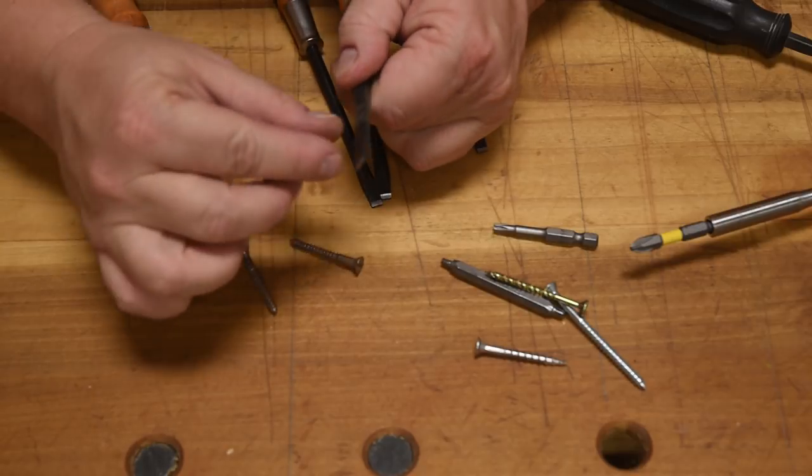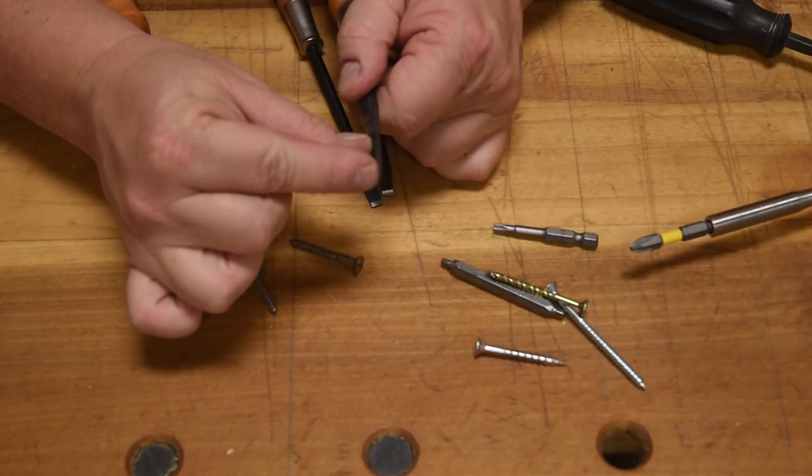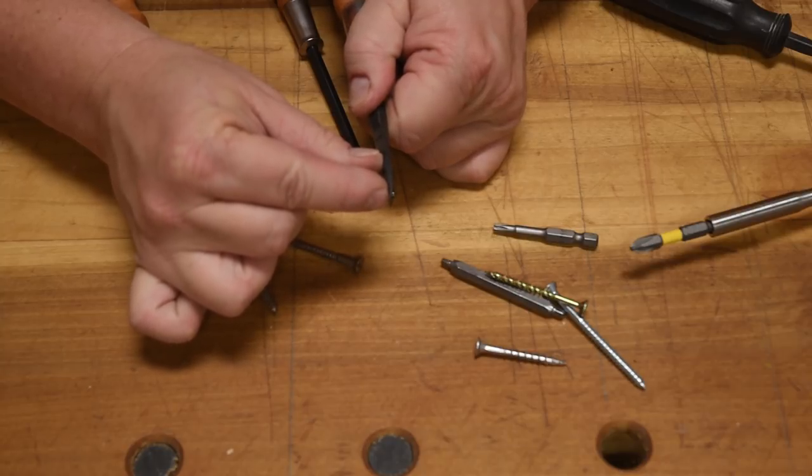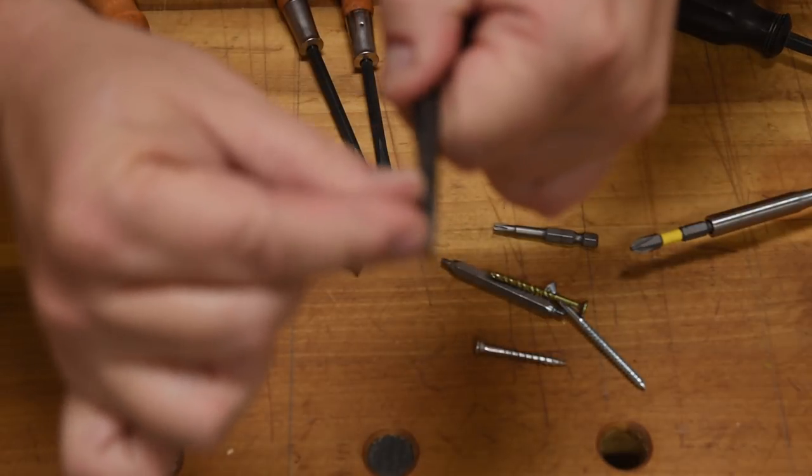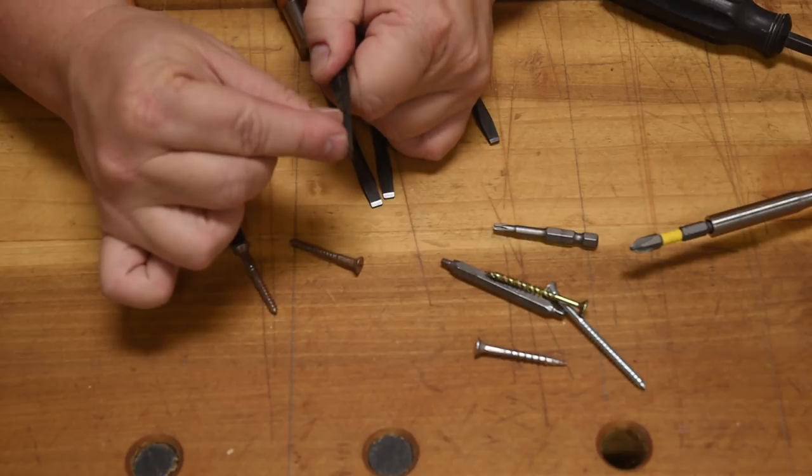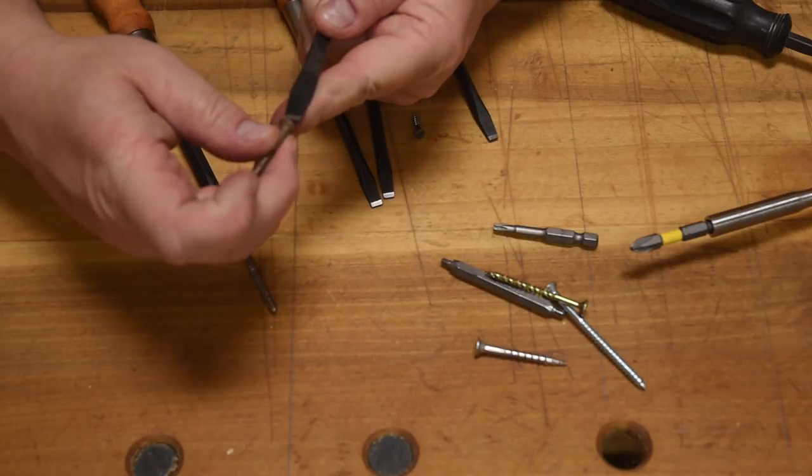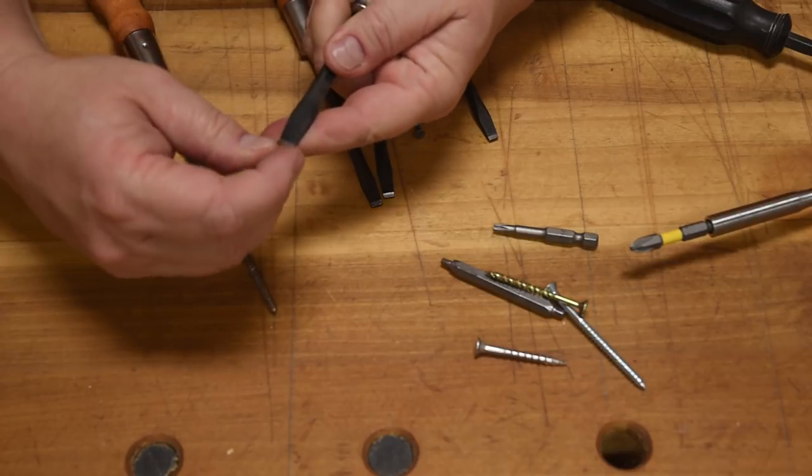And on the end, if you notice, I can drag my fingernail here to show you. Hear that? There's a little lip right there. So this bottom section, the part that fits in the screw, is perfectly sized for the screw.